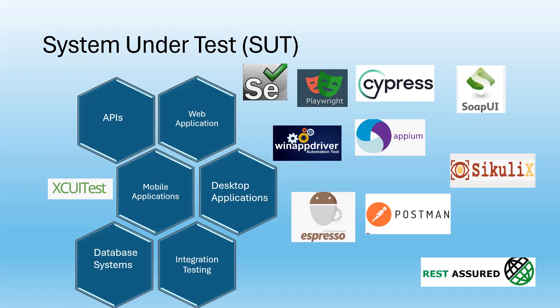For each of these systems, we have different types of tools to automate. For example, for web applications the most commonly used tools are Selenium, Cypress, and Playwright. For desktop applications we can use Appium, XUI, and TestComplete as commonly used automation tools. For API testing, we can use Postman, Rest Assured, or SoapUI. Likewise, we have separate tools for each system type and we can ensure the compatibility and reliability of the tool on each system and choose the correct tool.